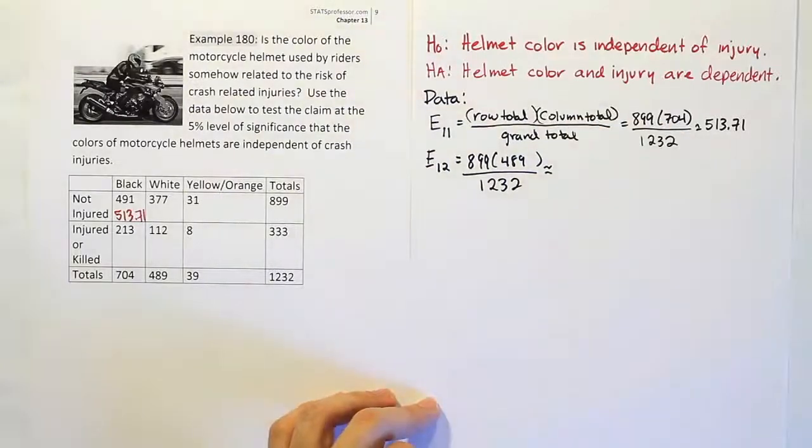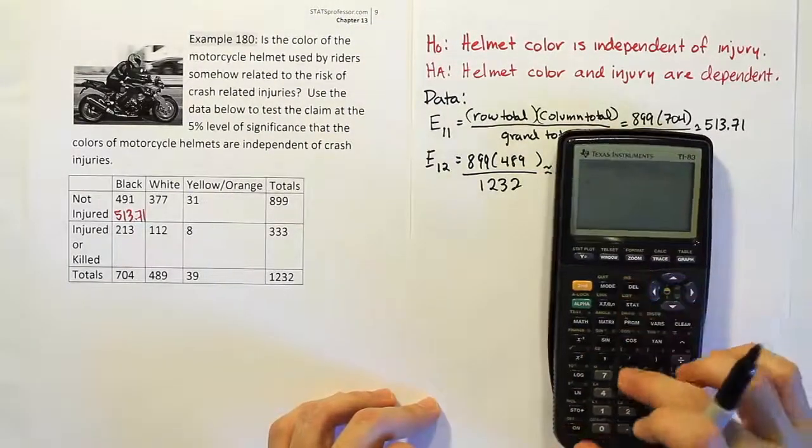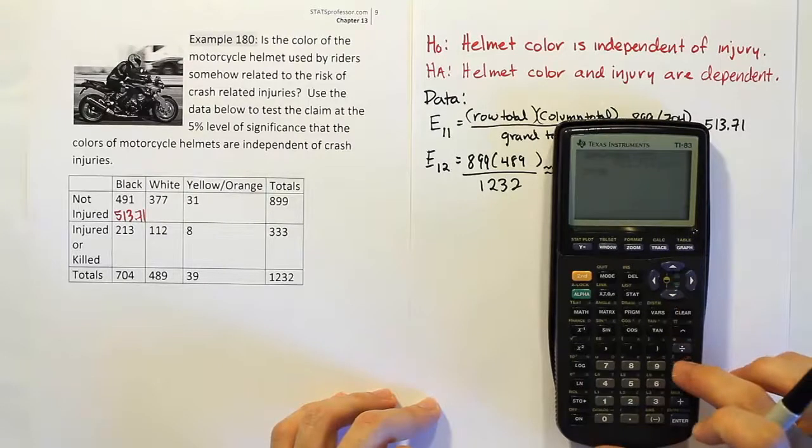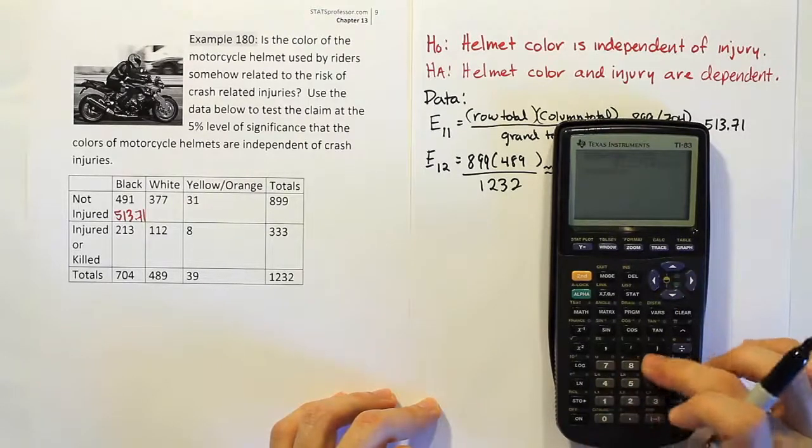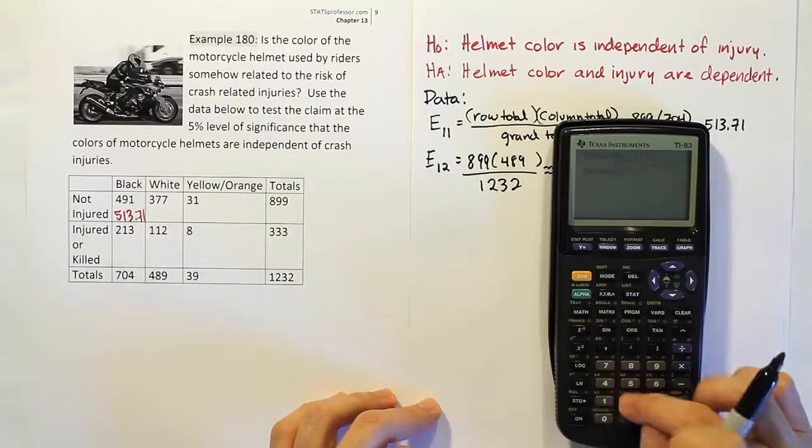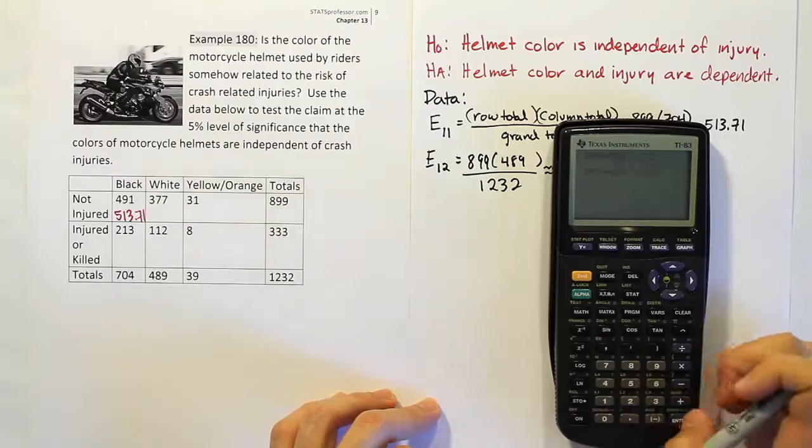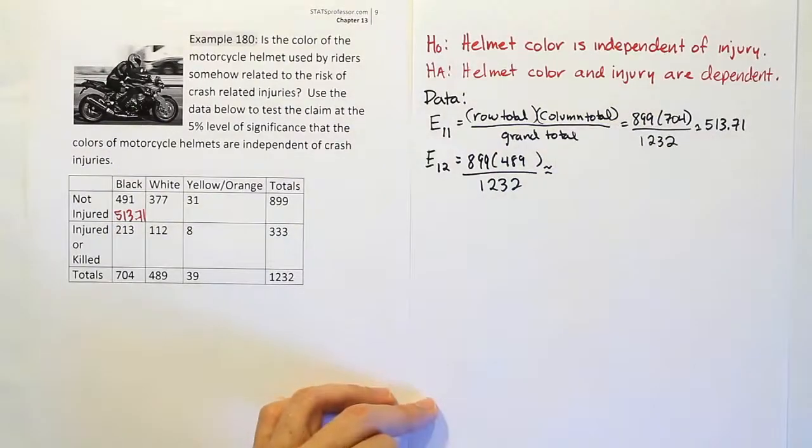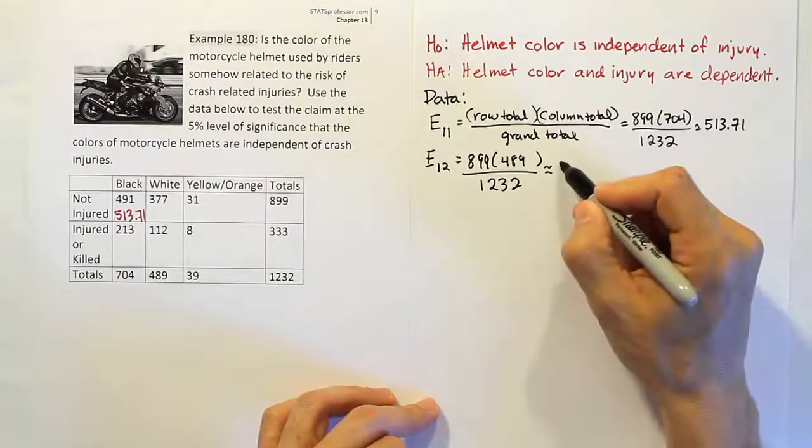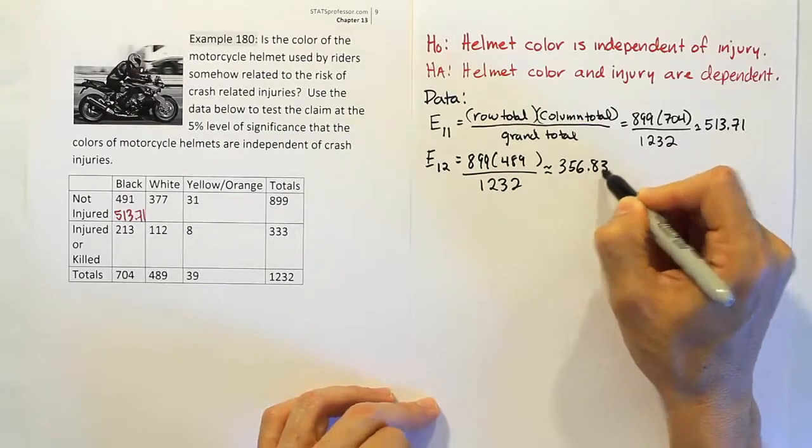What's that approximately? We have 899 times 489 divided by 1232. When we do that, we get 356.83.